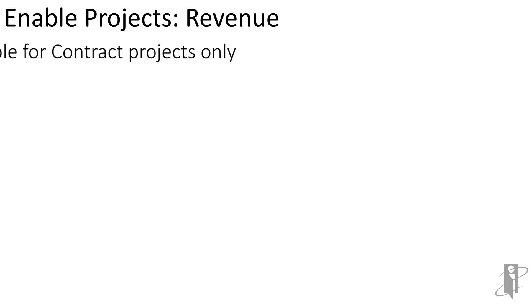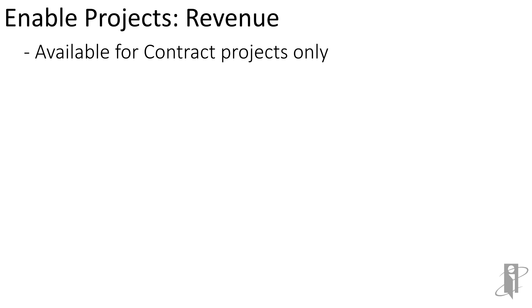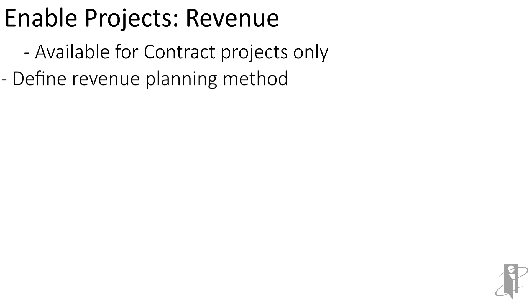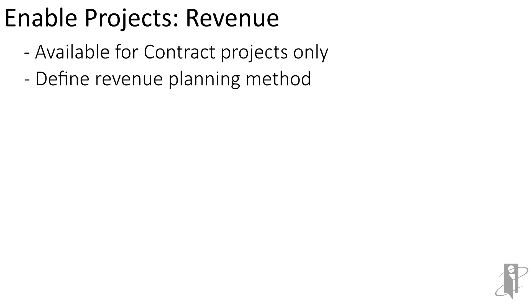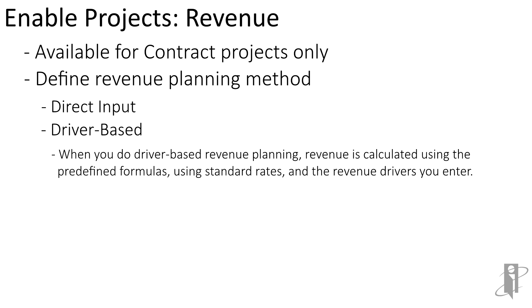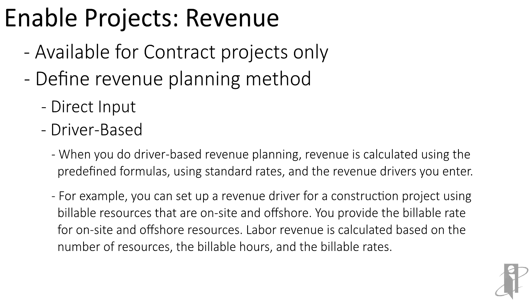Revenue only turns on for contract-specific projects. There are two different types you could do: direct input, meaning you're typing in a dollar amount, or driver-based. A driver might be how much labor you're putting into it, maybe a percentage done on-site, a percentage done offshore, number of people, billable hours, or billable rate. You can put all that in and enable it through the Projects Revenue portion.